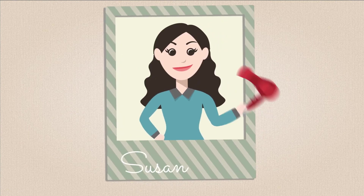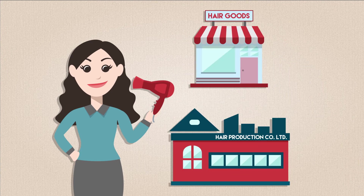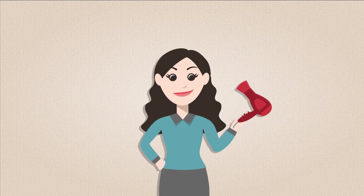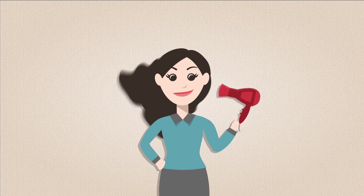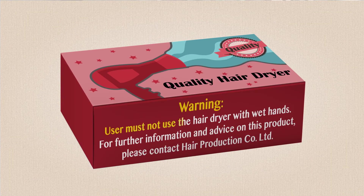One day, Susan bought a hairdryer from a shop called Hair Goods. The hairdryer was manufactured by Hair Production Company Limited, which had advised retailers to test it for efficiency and safety before selling. This wasn't just any old hairdryer — it was a new kind that dried hair very quickly by generating a lot of heat. On the box of each hairdryer, there was a warning label which said: 'User must not use the hairdryer with wet hands. For further information and advice on this product, please contact Hair Production Company Limited.' So, this hairdryer generates a lot of heat and can't be used with wet hands.